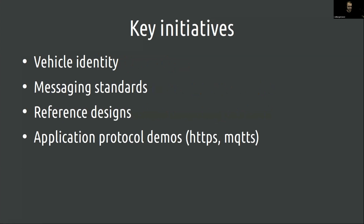The key initiatives we're going through now are: vehicle identity — what are we doing there; messaging standards, which is just getting started again because of the soft reset this year; reference designs that we're working on with multiple companies; and trying to see where we can do more around application protocol demos, of which we really just have one right now.